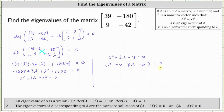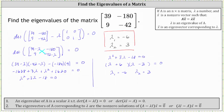Since the product on the left must equal zero, we have lambda sub 1 equals negative 6 and lambda sub 2 equals positive 3. So the eigenvalues for the given matrix are lambda sub 1 equals negative 6 and lambda sub 2 equals positive 3. I hope you found this helpful.